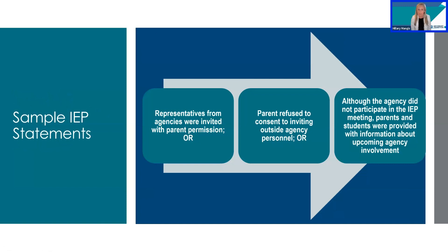Here are some sample IEP statements to consider. You might write: 'Representatives from agencies were invited with parent permission,' and then elaborate on what was discussed. You may also say the parent refused to consent to inviting an outside agency, but still provide additional information in case the parent wants to access that service later. Or you could note that although the agency did not participate, the parents and students were provided with information about upcoming agency involvement, including contact information for someone within that agency.